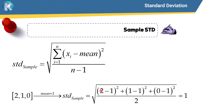We add these values and divide by the number of values minus 1. We have 3 data points, so we divide by 3 minus 1, then take the square root. The result is 1, so the sample standard deviation is 1.